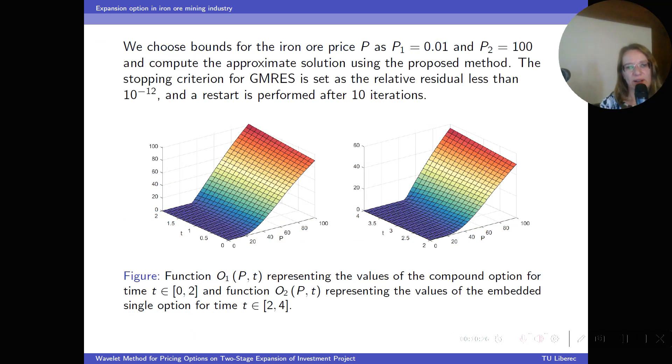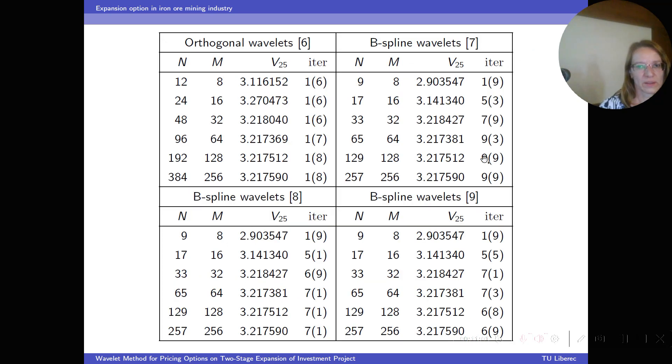And here you can see the results. The first graph represents the value of the option in the first stage of the project on the time interval [0,2], which means option to increase production both after 4 and 2 years. And the second graph represents the value of the second stage of the project on time interval [0,2], which means option to only increase production at time [0,4].